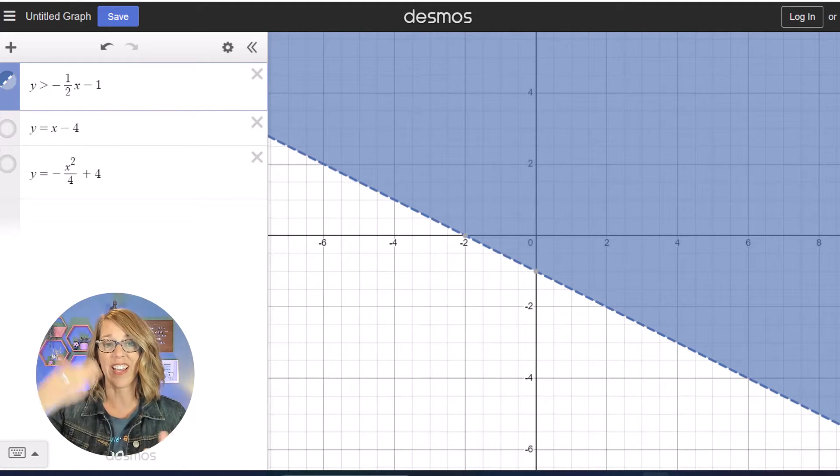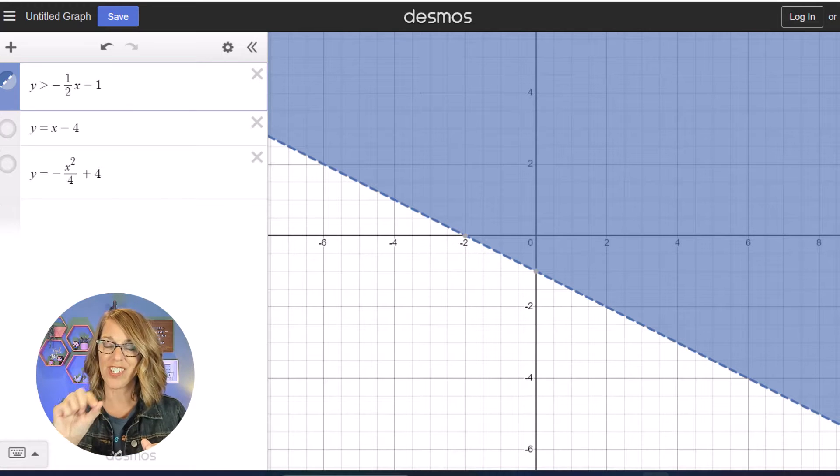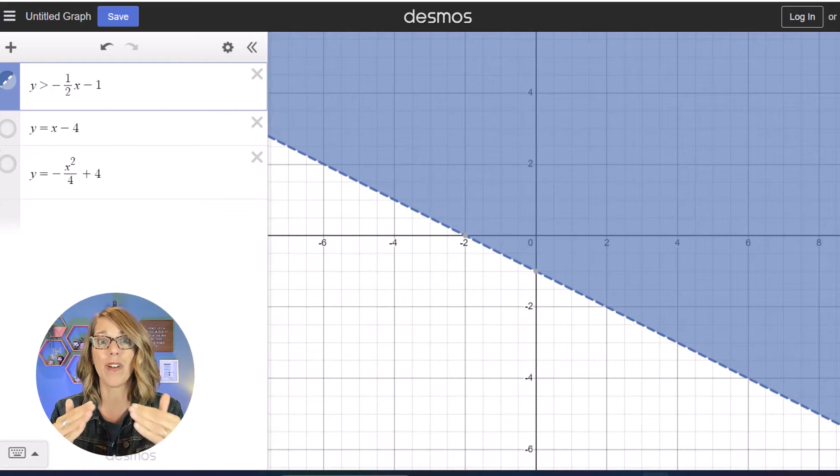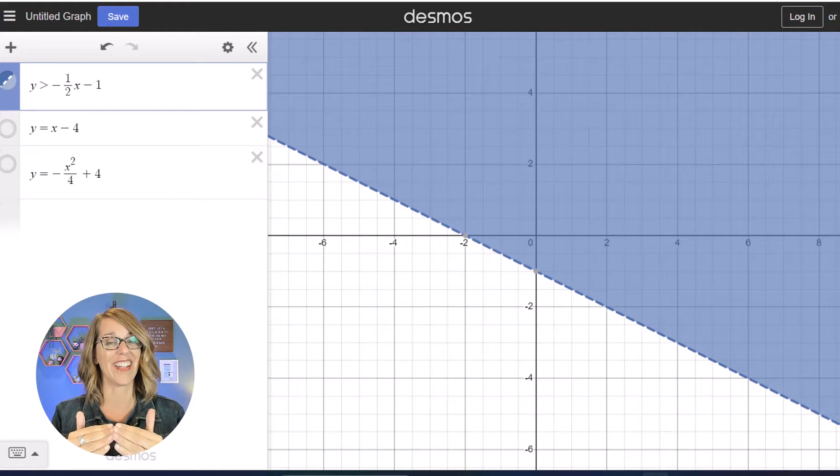Take a look at that dashed line too. This is a strict inequality. I want it strictly above the line, not on the line.